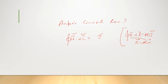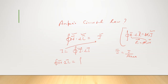Now suppose current is distributed through a surface with current density J. The relation between current and current density is I = ∮J·dS, where J is the current density, that is, current per unit area. Substituting the value of I gives us: ∮H·dL = ∫J·dS. This is equation number one.